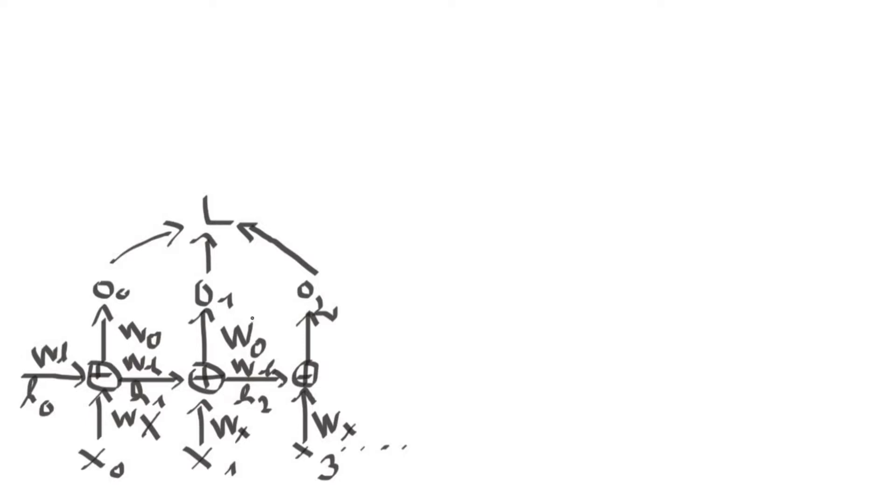So now we can compute the gradients for our weights using the backpropagation algorithm. Let's try to do that for the last time stamp. Okay now I see that here I put an x3, this should be x2. The first step in the backpropagation algorithm computes this partial derivative dL/do2, then it computes the second partial derivative which is do2 to this matrix.